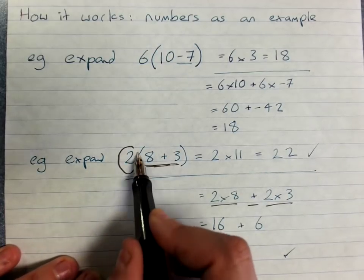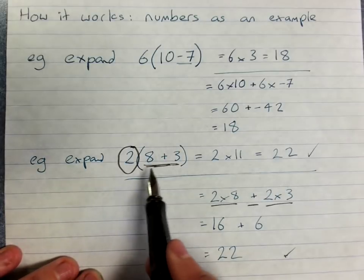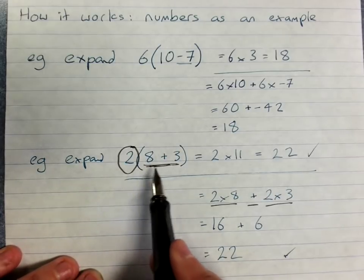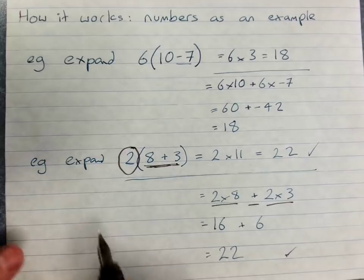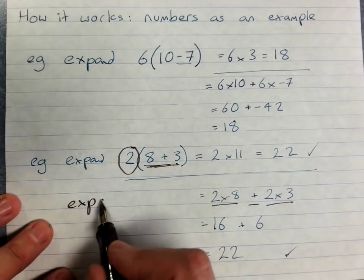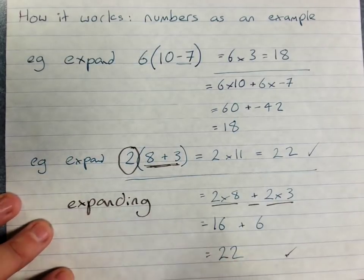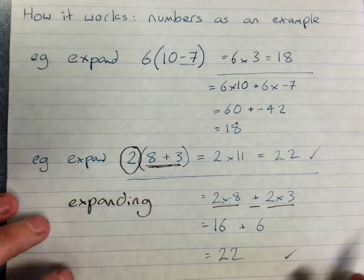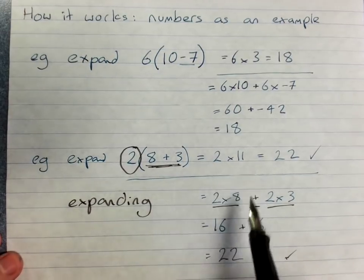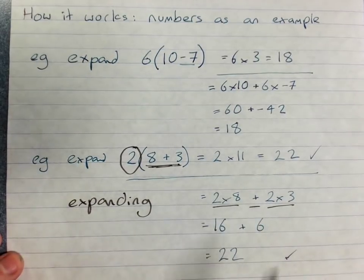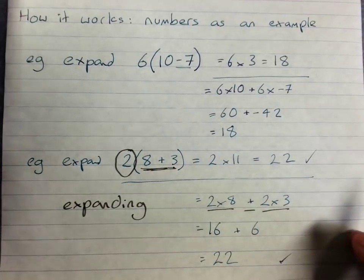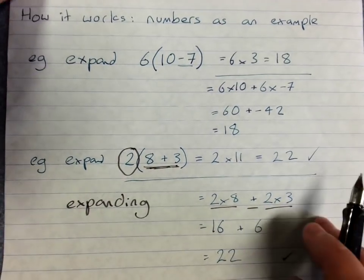And when I do the term outside multiplied separately by each of the terms inside the brackets, that's called expanding. The law that says I'm allowed to do that, that says both of these get the same answer, is called the distributive law. But I don't need you to know that, it's useful if you do.